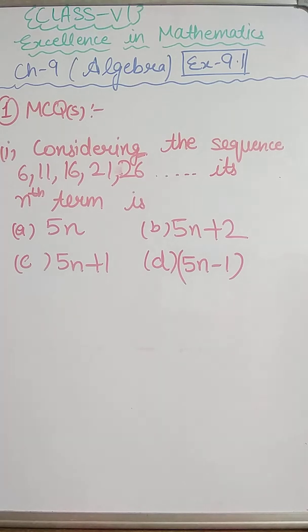First part is considering the sequence 6, 11, 16, 21, 26 and a blank. Given its nth term is options, so we have to keep this sequence according to this sequence. First we will fill the answer in this blank, then we will see that the nth term, here we have to tell the formula which formula is used.